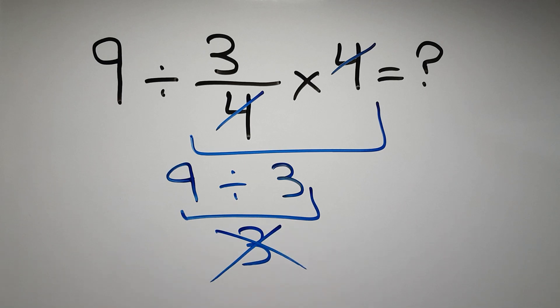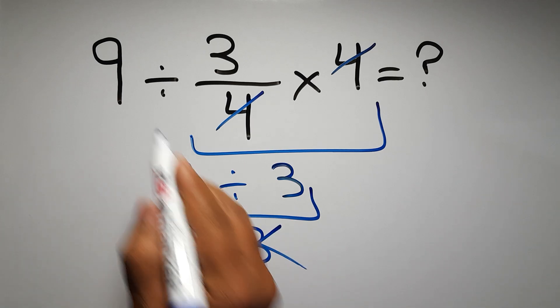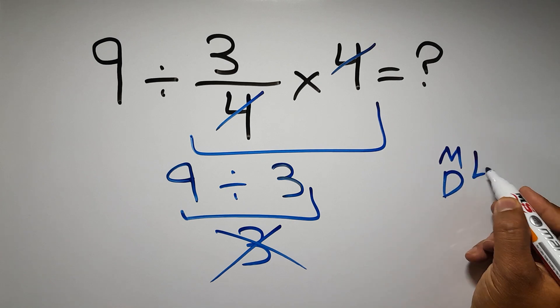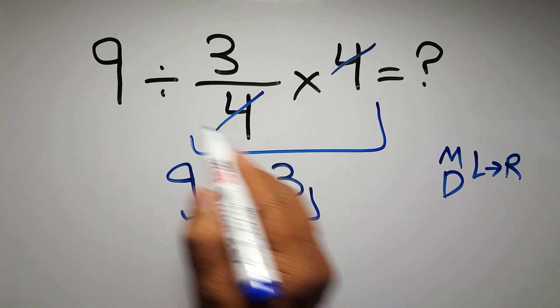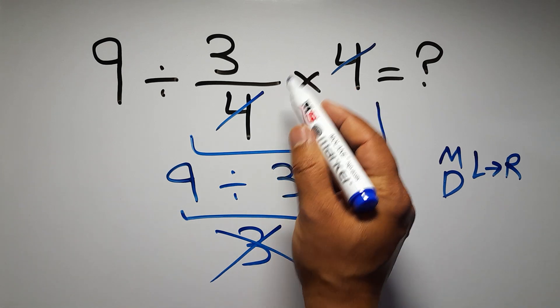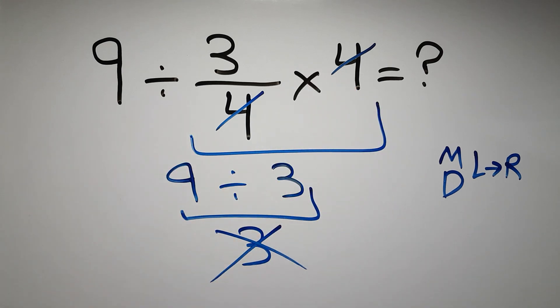Because according to the order of operations, multiplication and division have equal priority and we have to work from left to right. So here first we have to do this division, then this multiplication. If we do this multiplication before this division, it is wrong.